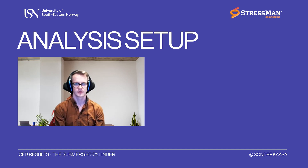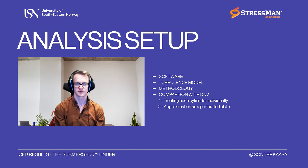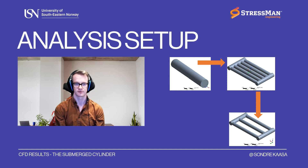Analysis setup. The CFD analyses are performed using OpenFOAM, which is an open source CFD software. The turbulent flow characteristics are evaluated with RANS turbulence modeling using the K-Omega SST turbulence model, which inherits the best features of the standard K-Epsilon and K-Omega models. Two geometries are analyzed: one simple 3D cylinder, which is used to verify the methodology, and one cylindrical frame. The 3D cylinder analysis is easily verified with DNV since theoretical data is well established. Two configurations of the complex geometry are investigated, as shown in the pictures on screen, where the purpose is to demonstrate the effect of cylinder spacing when comparing the results to DNV.